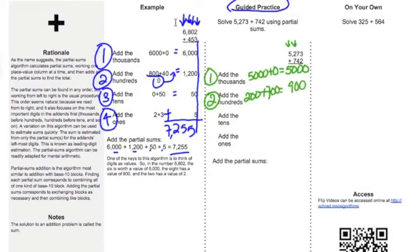Notice that I'm lining up my place values. My ones place, my tens place, and my hundreds place. My next step is the tens place. That's where I end up here. I have 70 and 40, which equals 110.